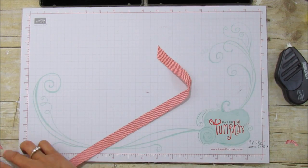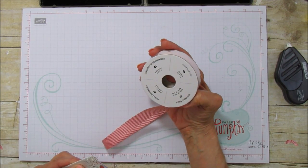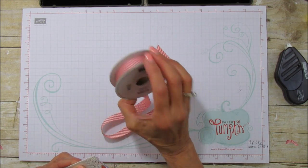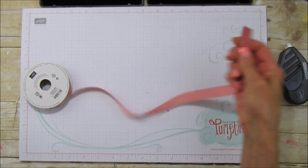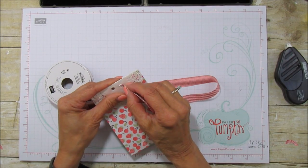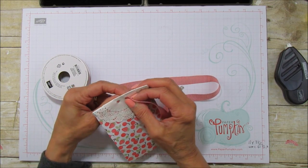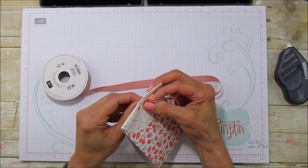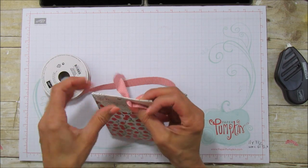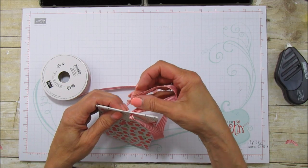And this ribbon is also retiring. And this was still available too. It's the mini striped ribbon. This is the Watermelon Wonder. That is one of our old in colors. We are getting new ones. And so I'm just going to take this ribbon.